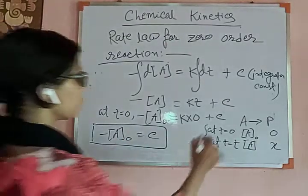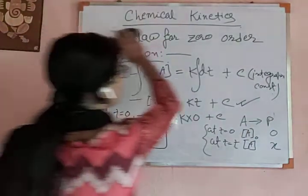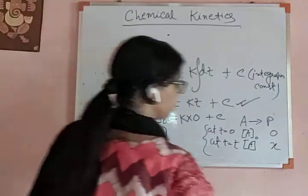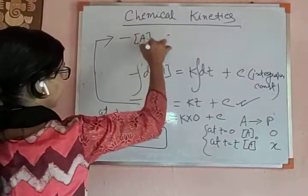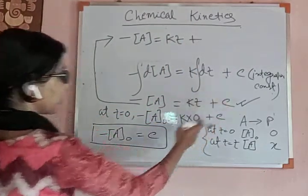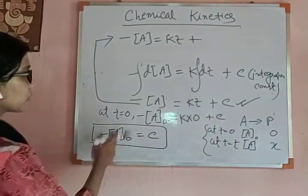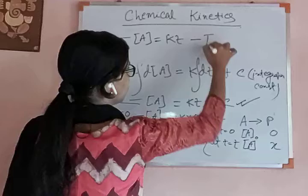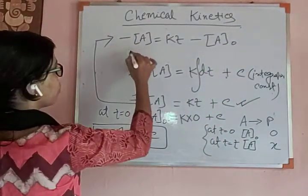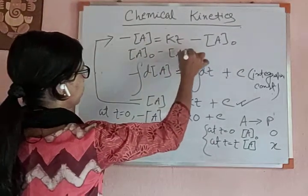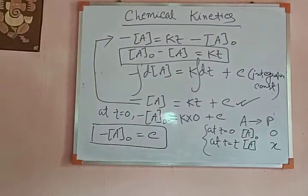Now put this value of C in the equation. From this equation, minus A equals KT plus C. After putting T equal to 0 we got C equals minus A₀, so in place of C we put minus A₀. We obtain A₀ minus A equals KT. This is the integrated rate law for a zero order reaction.